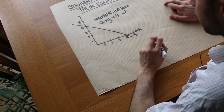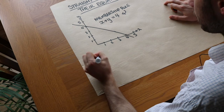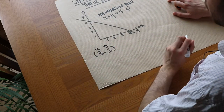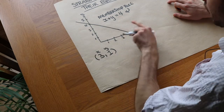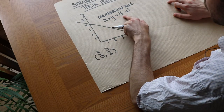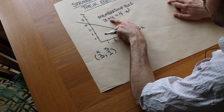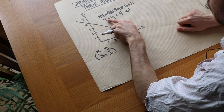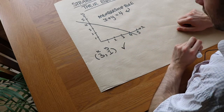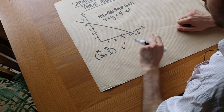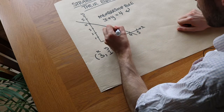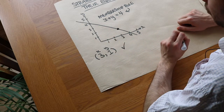Let's take the point 3, 1. Remember that the first value is the x value and the second value is the y value. We require that the x value plus the y value is 4. The x value is 3 plus the y value 1: 3 plus 1 equals 4. Yes, it obeys the rule, so the point 3, 1 is on the line, and indeed we can see that it is.